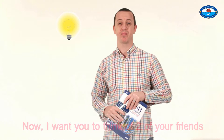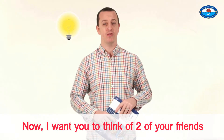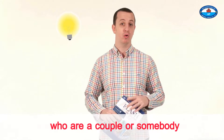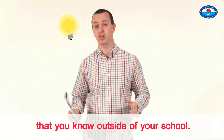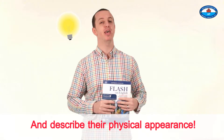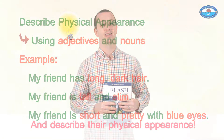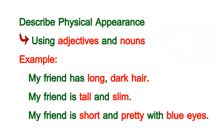So did you get that? Now I want you to think of two of your friends who are a couple, or somebody that you know outside of your school, and describe their physical appearance. You can describe your friend's physical appearance by using adjectives and nouns. For example, you can say: my friend has long dark hair, or my friend is tall and slim, or my friend is short and pretty with blue eyes.